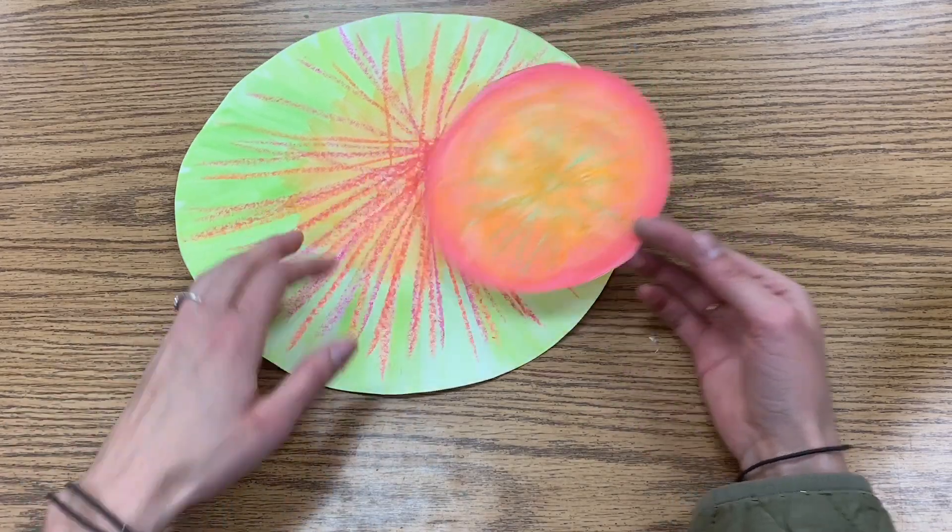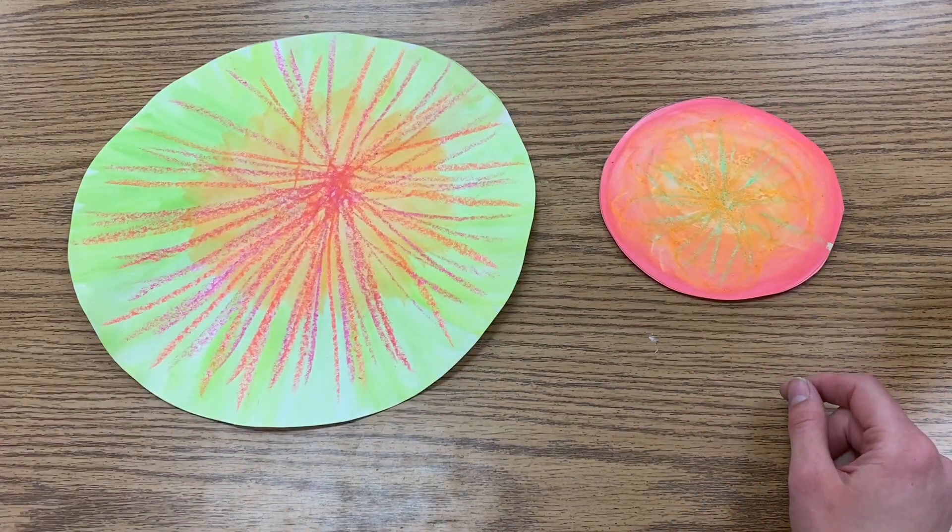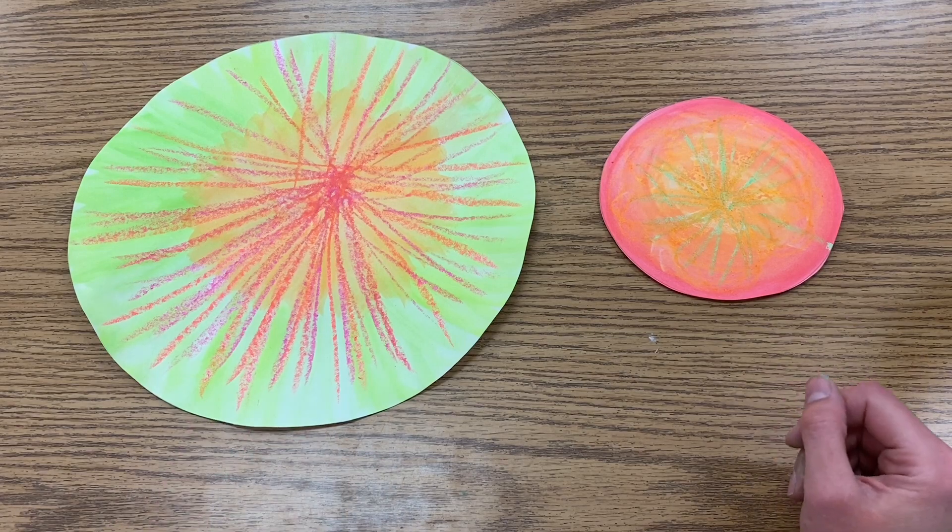Next we're going to take our circles and fold them so we can create radial symmetry when cutting our petal and flower shape designs.